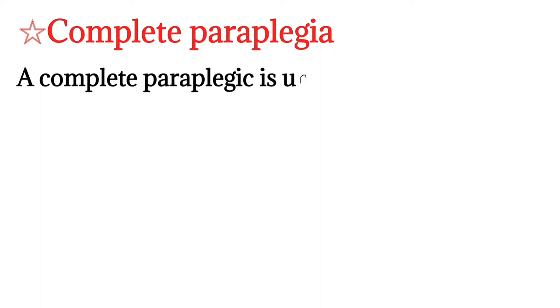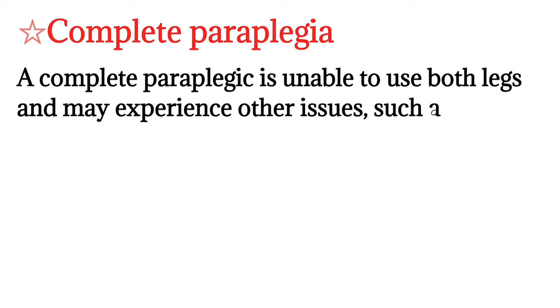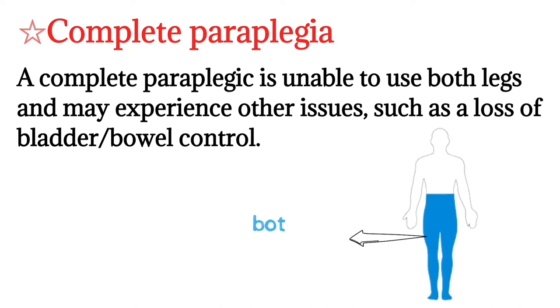In complete paraplegia, the patient is unable to use both legs and may experience other issues such as loss of bladder and bowel movement control. Both legs are affected.